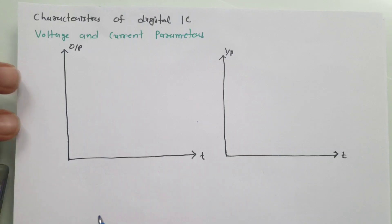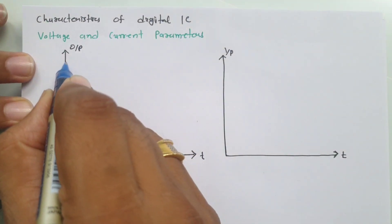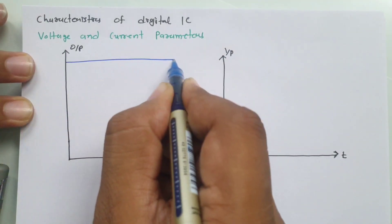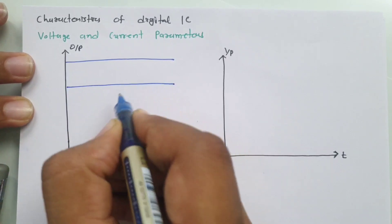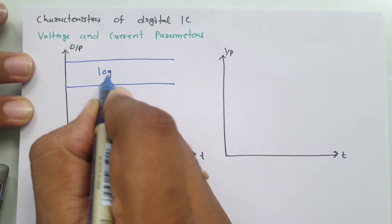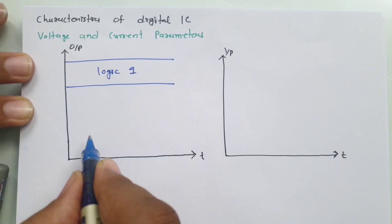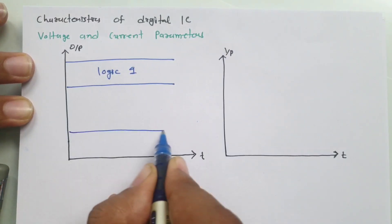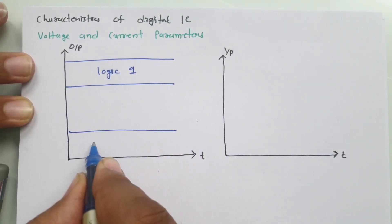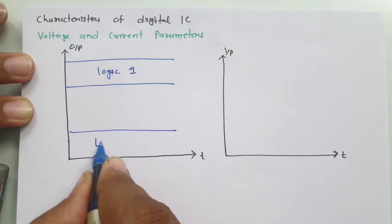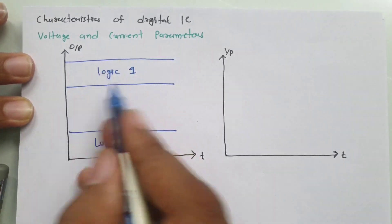When we talk about the output voltage range, here we have a range in which we define logic 1, and here we have a voltage range for output that defines logic 0. That is for output.